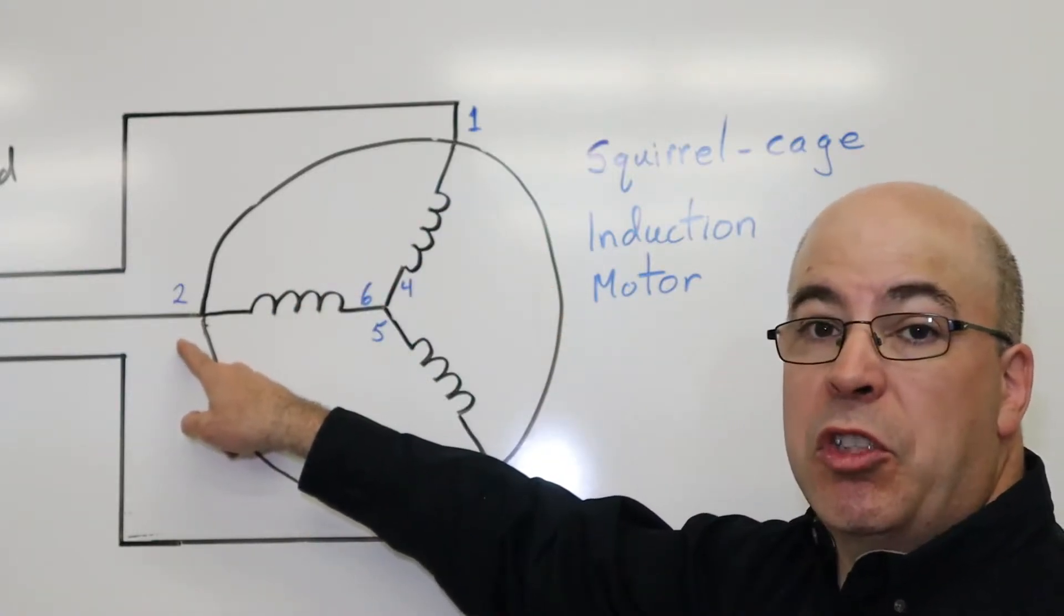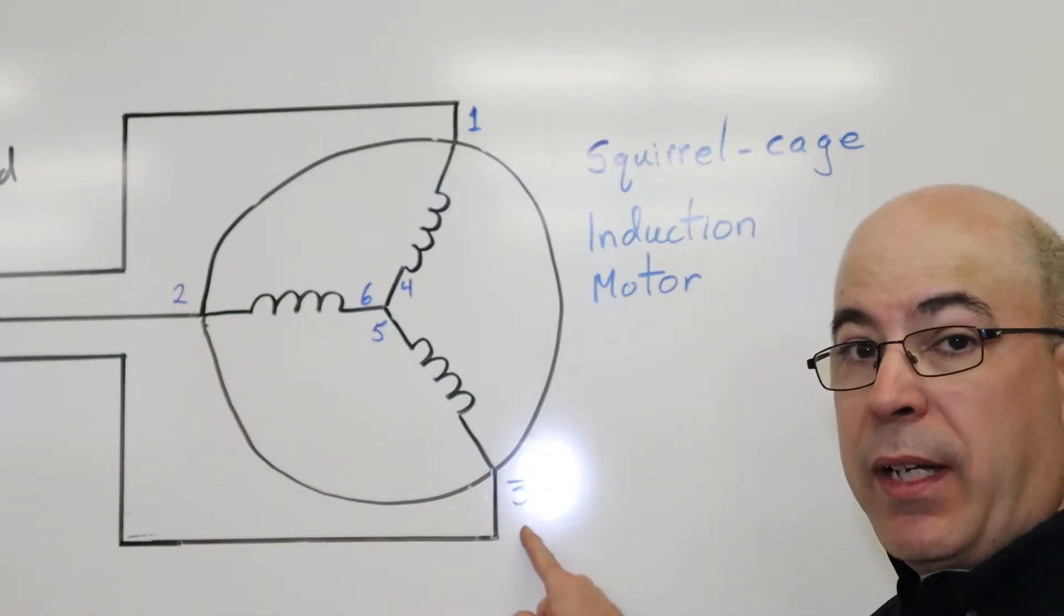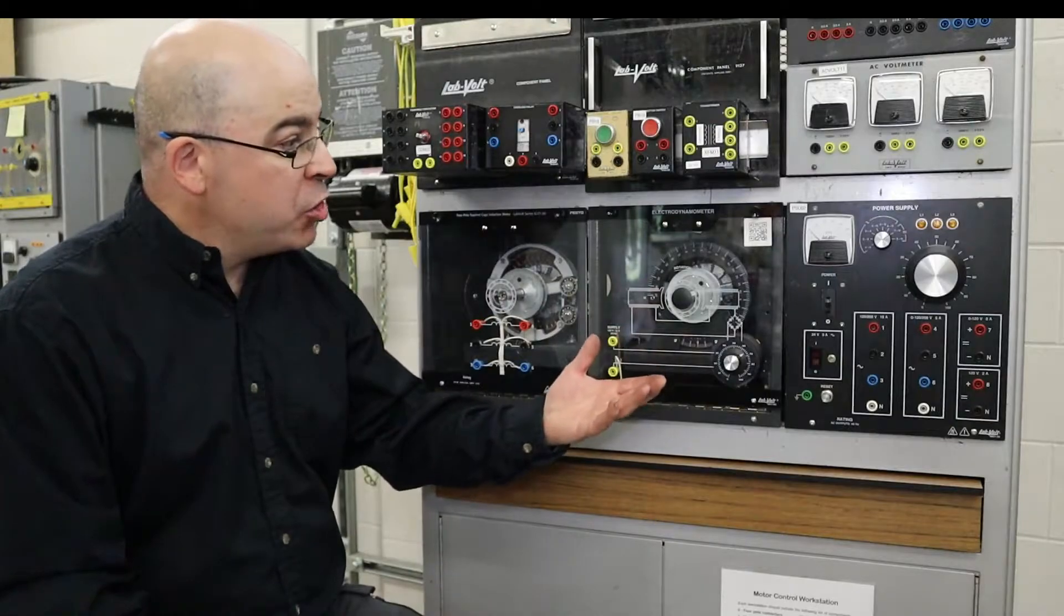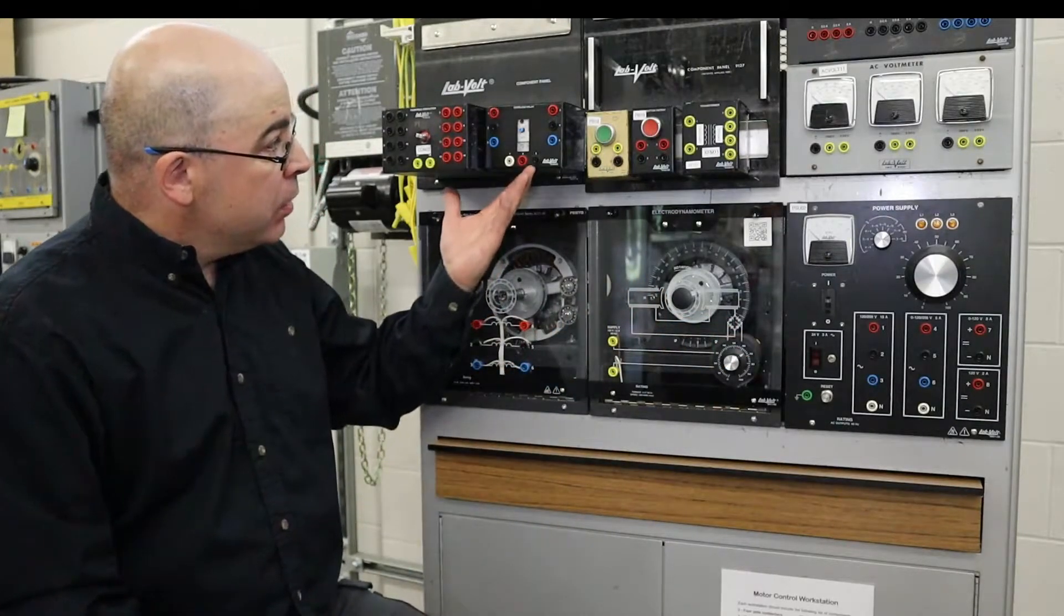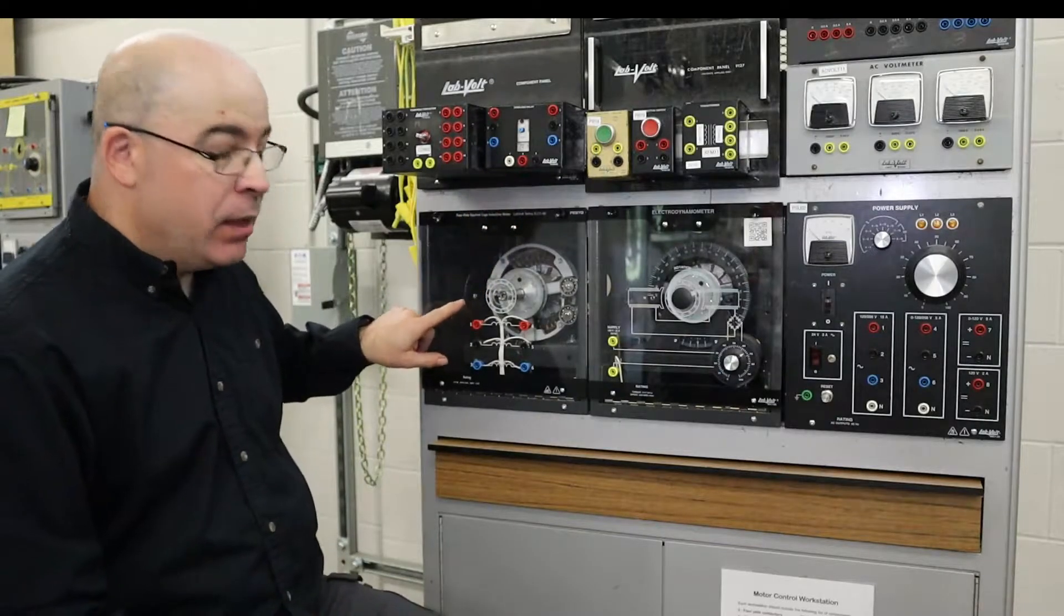Likewise for terminal two, it's going to get its power source, as well as terminal three. Using the diagram on the whiteboard as an example, I'm going to demonstrate how to wire the contactor, overload relay, and finally the motor.